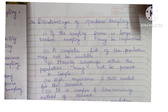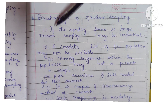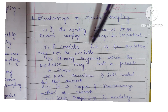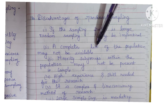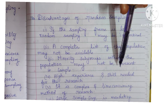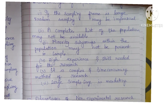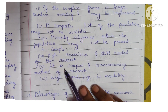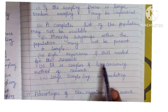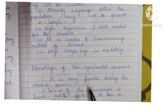Next: disadvantages of random sampling. If the sampling frame is large, random sampling may be impractical. A complete list of the population may not be available always. Minority subgroups within the population may not be present in the sample. High experience and skill of the researcher is needed. It is a complex and time-consuming method of research. Large sample size is mandatory.